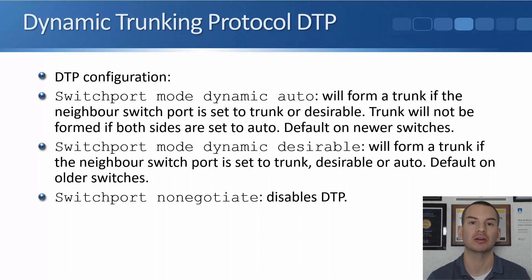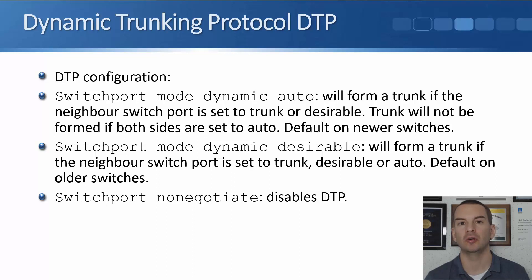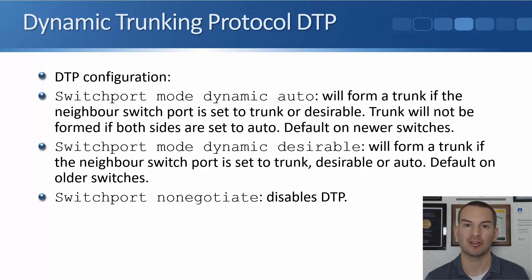Dynamic auto is configured under the interface and will form a trunk if the neighbor switch port is set to trunk or desirable. A trunk will not be formed if both sides are set to auto. This is the default on newer switches, so with newer switches the default is dynamic auto. When you connect them to each other, both sides are set to auto, so they will not form a trunk — it stays as an access port.